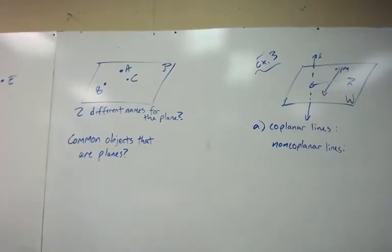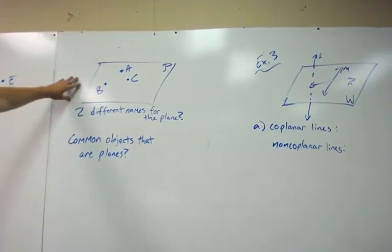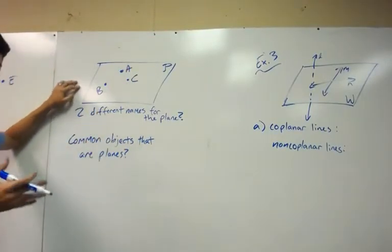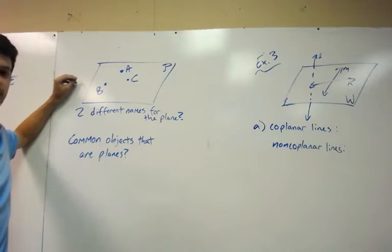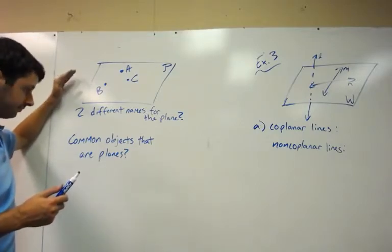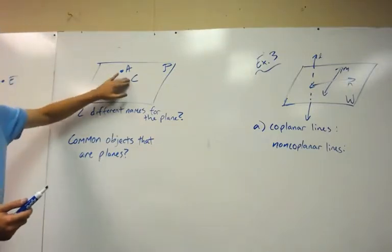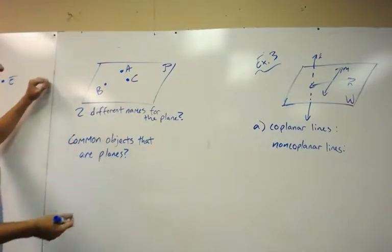A plane is a flat surface that has no thickness and extends forever. And it is represented, you have to have at least three non-collinear points in order to have a plane. If you have everything on one line, that's just a line. Until you have three non-collinear points, you do not have a plane. So since there are three non-collinear points here, you therefore have a plane.